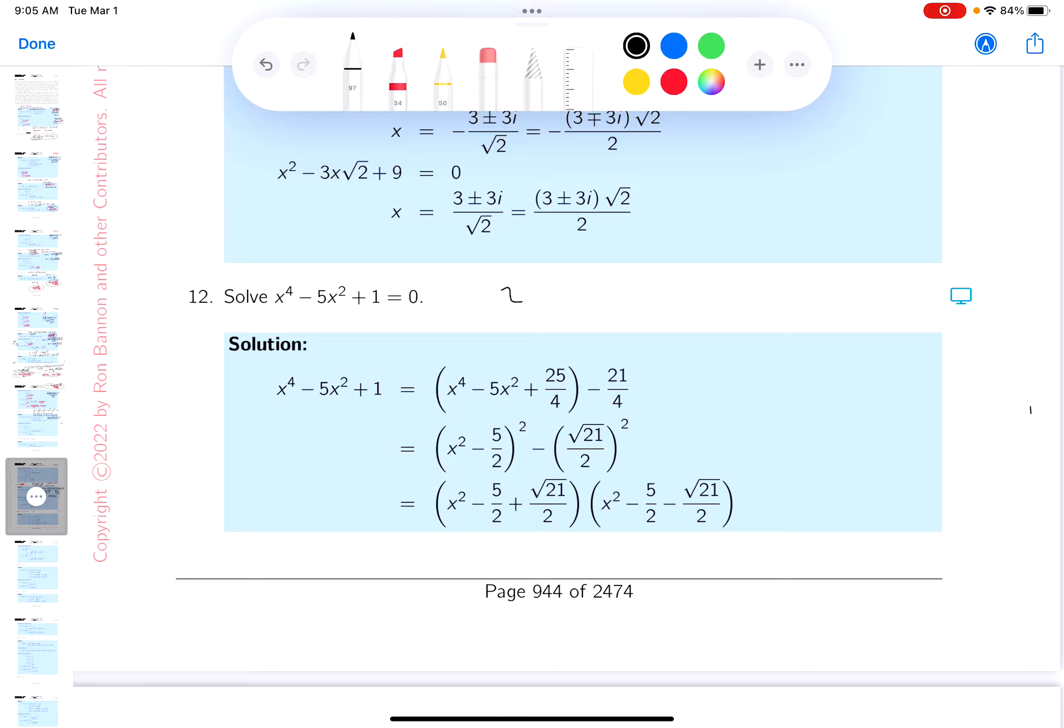I'm going to do this by completing the square. This is x to the fourth minus 5x squared. I take half of the minus 5, which is minus 5 halves, and square it, and that would give you 25 quarters. So I'm going to add 25 quarters and subtract 25 quarters.